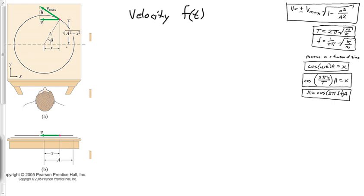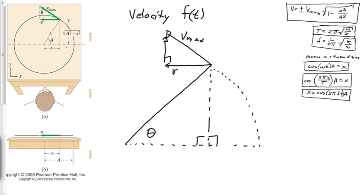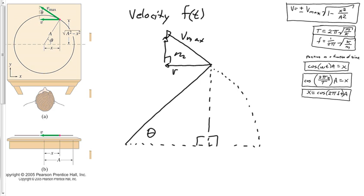Now let's look at velocity as a function of time. Recall that v_max is the tangential velocity. I'm zooming in on this system, and I need to express which angle in this triangle is equivalent to angle θ. If this is angle θ at the center, I will show the proof that the same angle θ appears up in the velocity triangle.